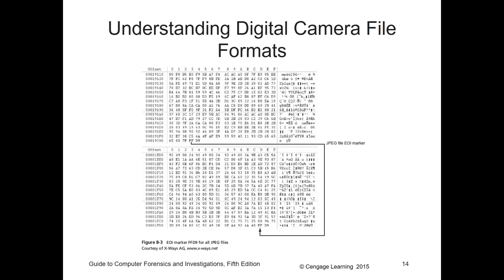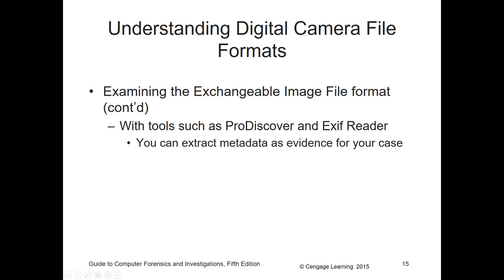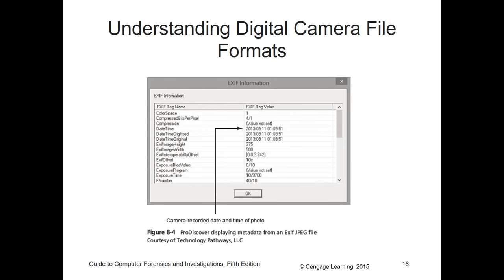Here we have our JPEG file with its file markers — the FFs. When examining the exchangeable image file format, you can use tools such as ProDiscovery or an .exif reader to extract metadata as evidence. Pay attention to things like modification date, times, last accessed, and when taken.